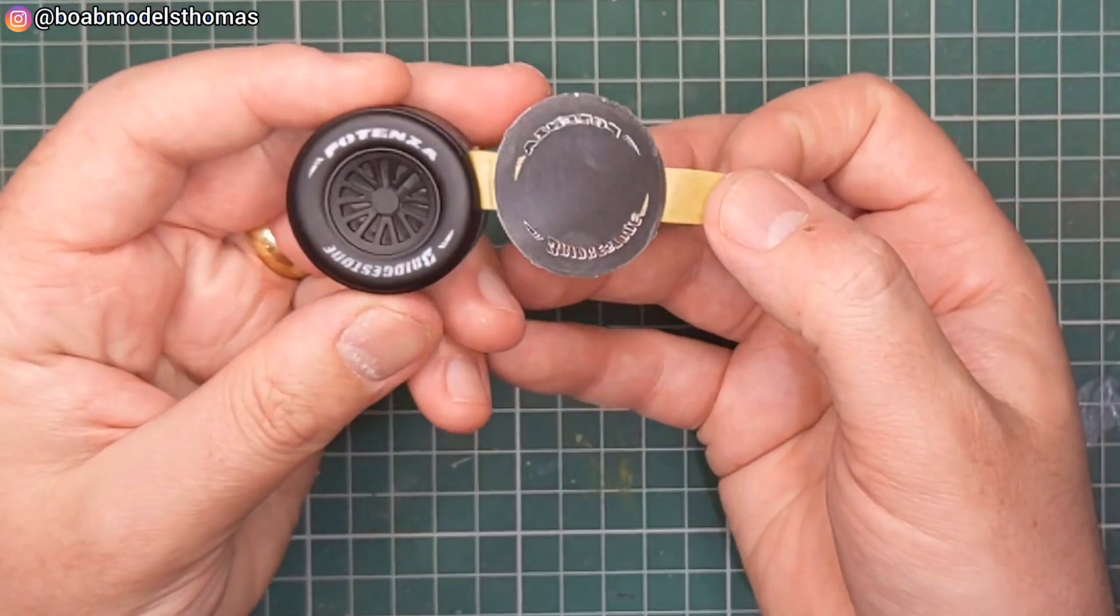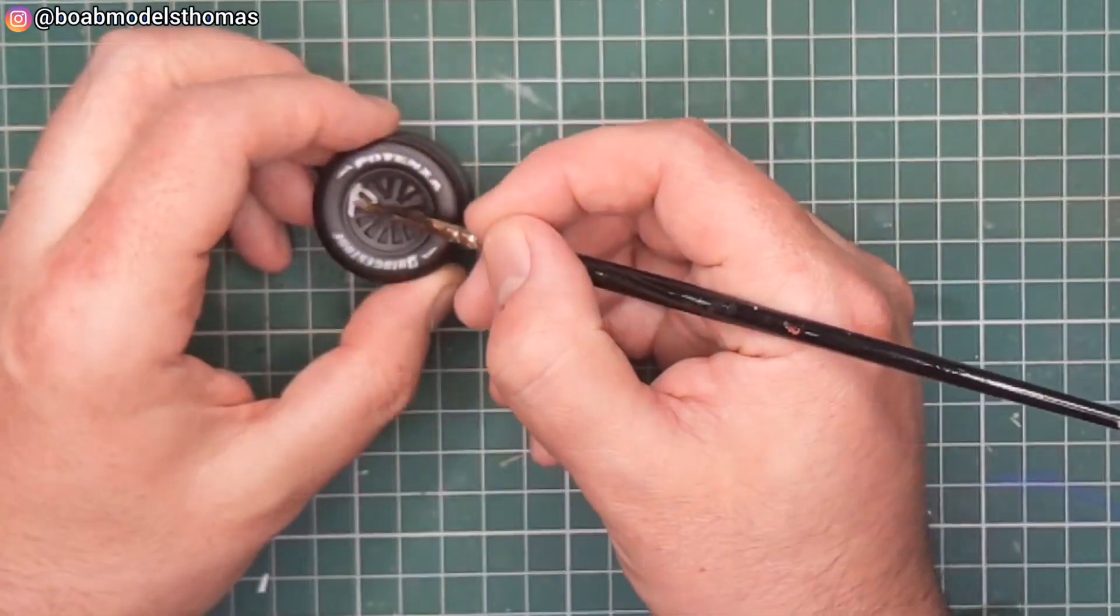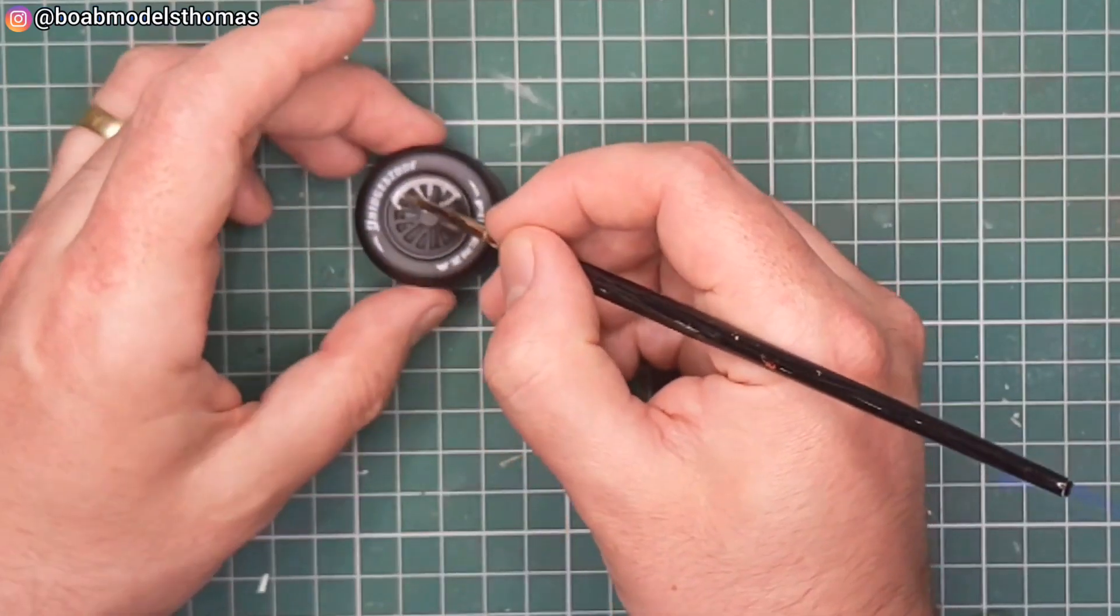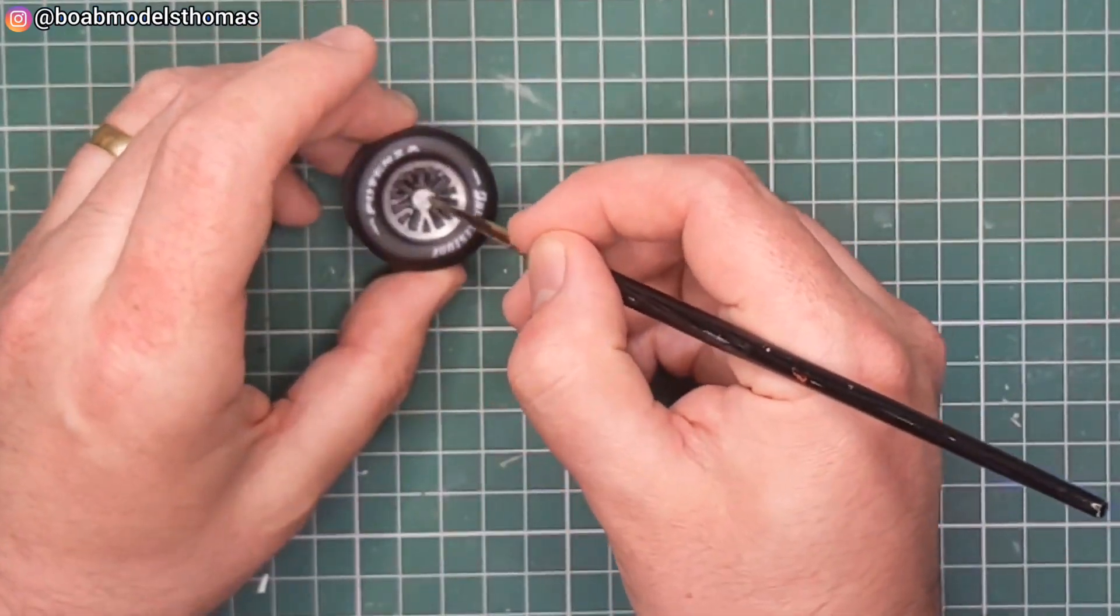And there it is. That looks pretty good if I say so myself. Same job was done on the other side. And then I used some Revell Silver paint on the hubs like so. This is sped up to 5x speed.